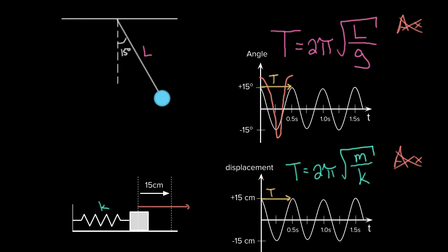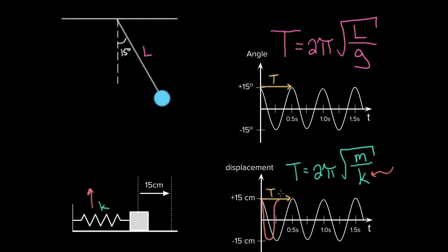As for the differences: the denominator for the mass on a spring depends on K, the spring constant. More spring constant means more restoring force, which means the mass moves faster, taking less time for a full period — so dividing by a bigger K gives less period. The same logic applies to the pendulum, but the restoring force isn't a spring, it's gravity. A bigger G gives a bigger restoring force, the pendulum moves faster, and it takes less time to complete a full period.